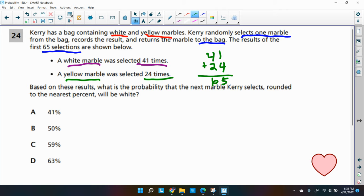And yes. So we're sure that she actually selected a marble and put it back 65 times. So based on these results, what is the probability? And they didn't say experimental. You know, it's indicated there because that's what she actually did. So what is the probability that the next marble Kerry selects, rounded to the nearest percent, will be white?